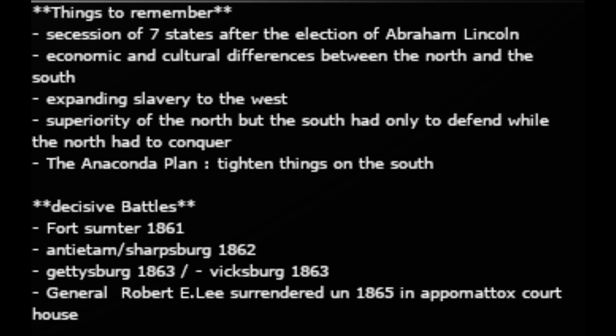The North had a strategy called the Anaconda Plan, made by General Winfield Scott — also called Scott's Great Snake. The plan was designed to tighten pressure on the South by closing harbors along the coasts and attempting to take the Confederate capital, Richmond, Virginia, in order to strangle the Confederacy.